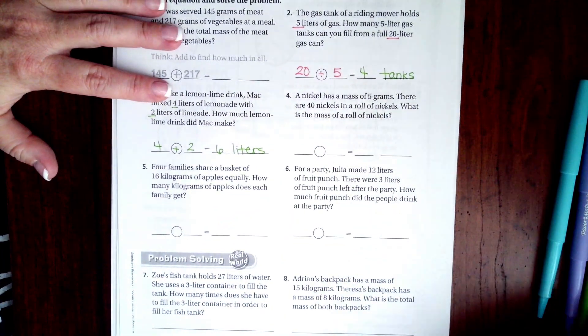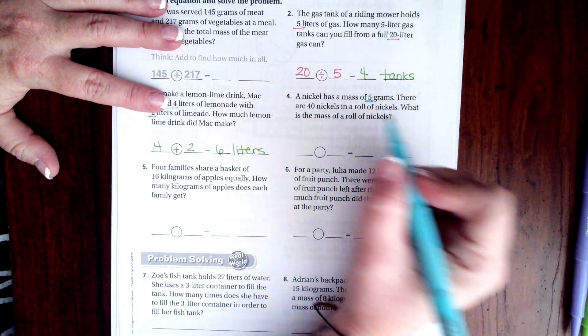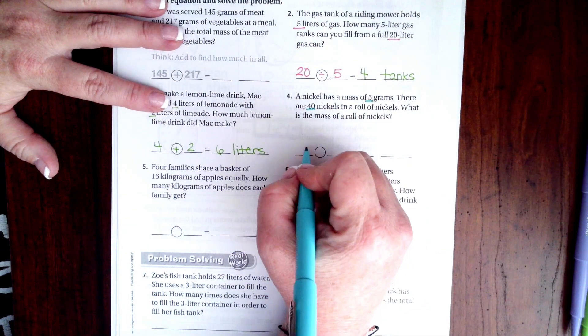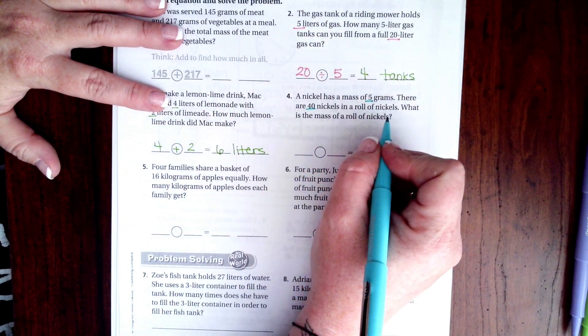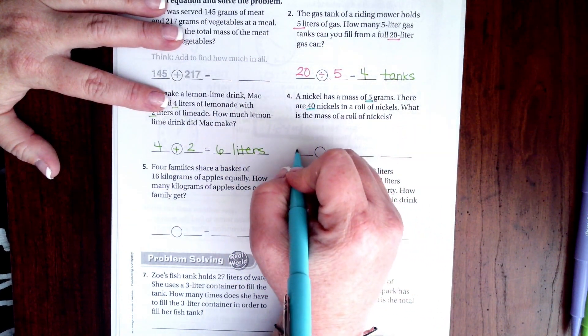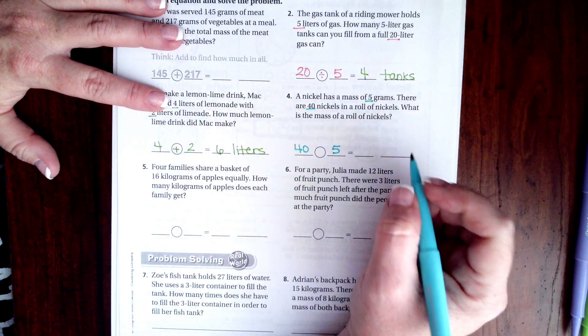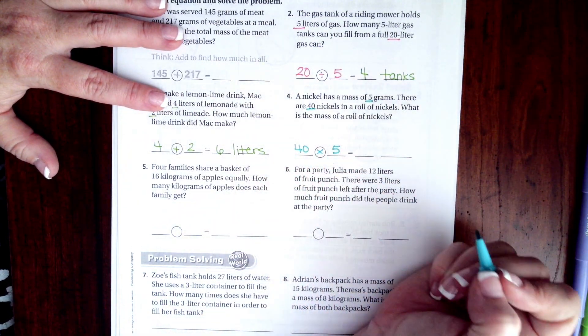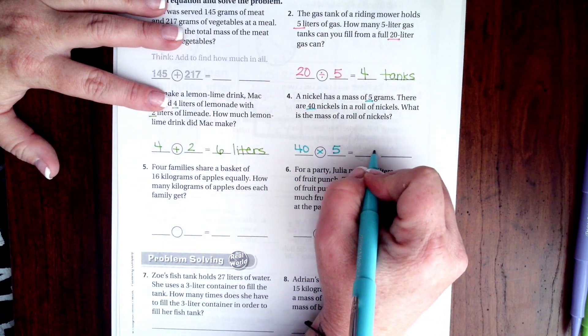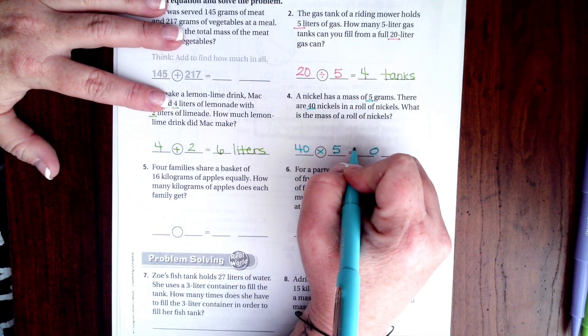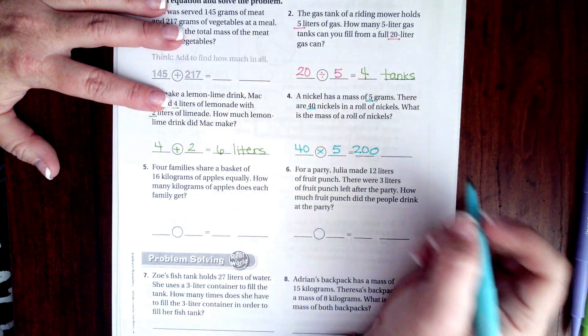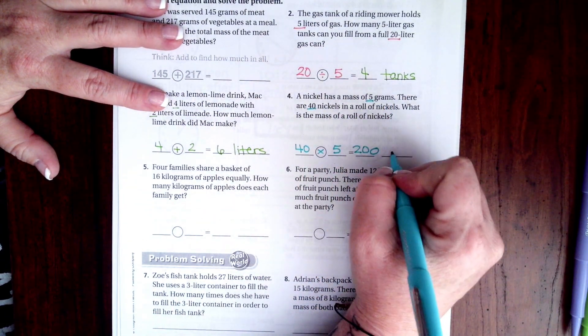A nickel has a mass of 5 grams. There are 40 nickels in a roll of nickels. What is the mass of the roll of nickels? Well, we have 40 nickels and each one weighs 5 grams. We need to multiply. So 5 times 0 is 0 and 5 times 4 is 20. So we have 200 grams.